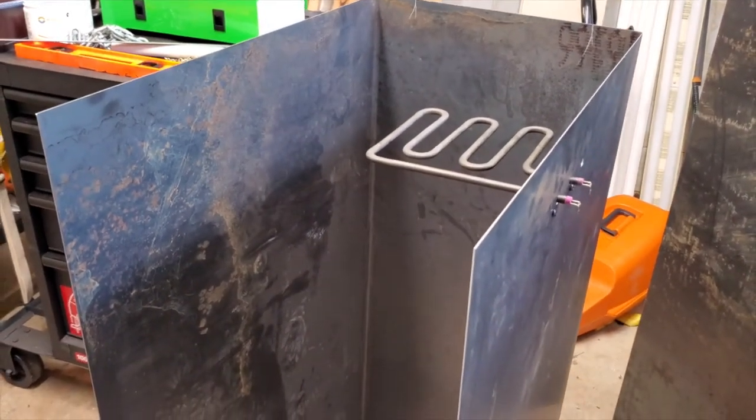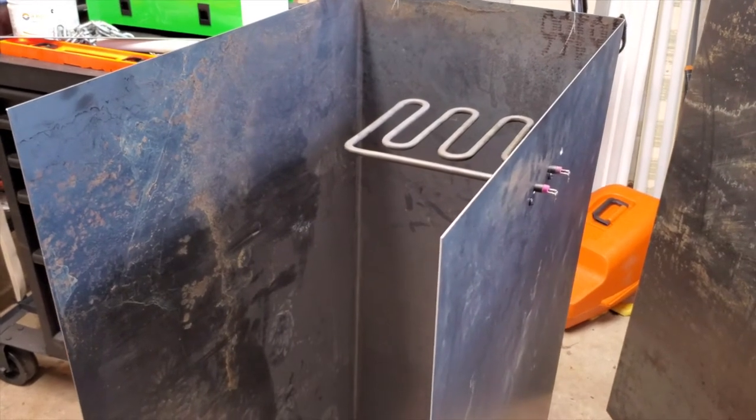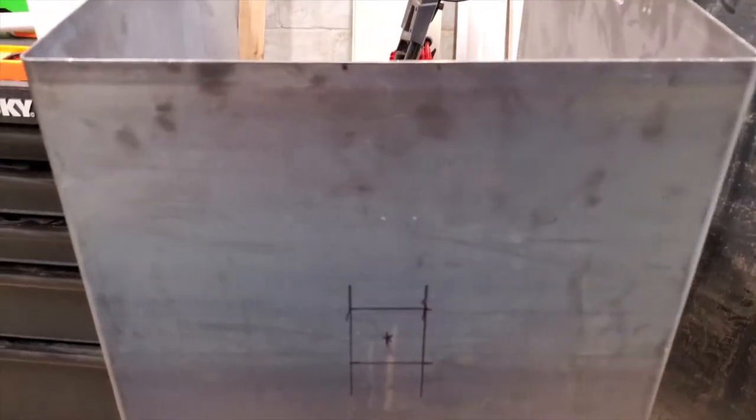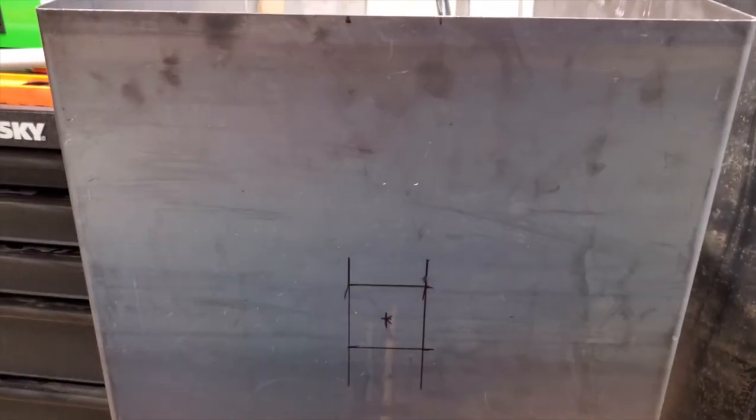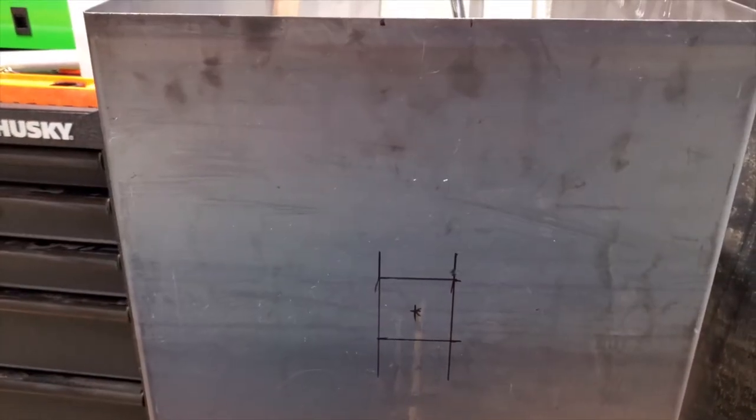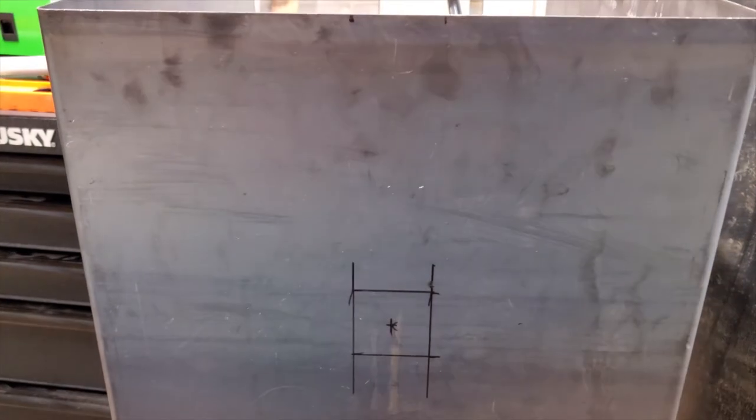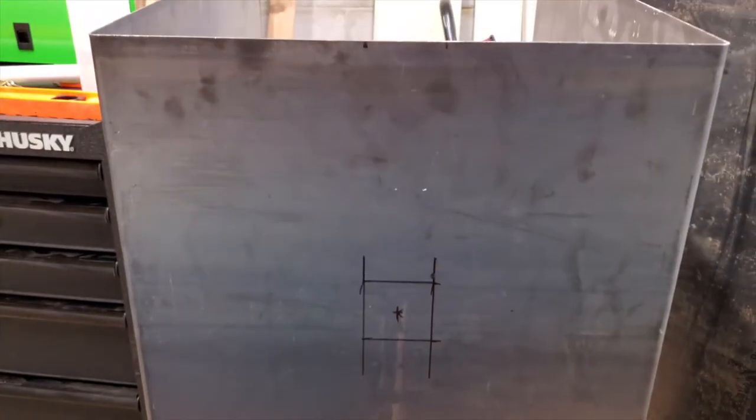So this is just getting started getting this built. Here I'm laying out where the smokestack is gonna be. I'm gonna have it start eight inches down from the top, and then it'll come right out the back and then stand up about an inch or two above the top of the smoker. And it's just gonna be a two-inch piece of square tubing, should be plenty being that this is electric.